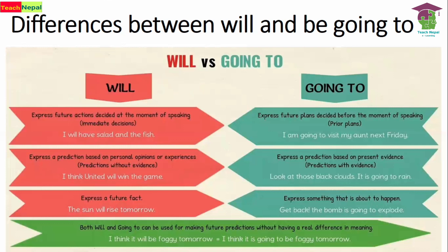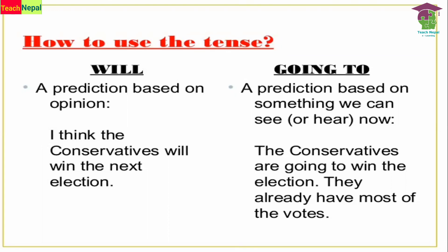'The bomb is going to explode' — something about to happen with known evidence. Both 'will' and 'be going to' can be used for making future predictions without a real difference in meaning, but context matters. Use 'will' for immediate decisions and predictions based on opinion; use 'be going to' for prior plans and predictions with evidence. For example: 'I think the Conservatives will win the next election' — just an opinion. 'The Conservatives are going to win — they already have most of the votes' — based on evidence.